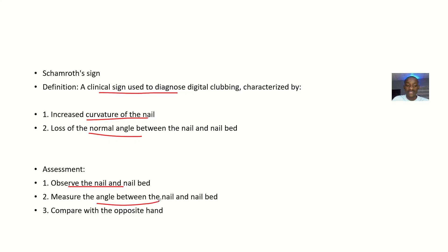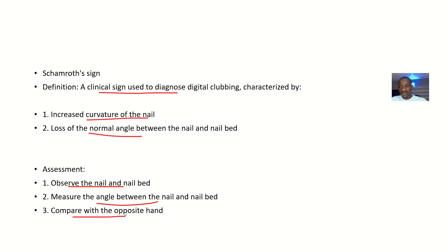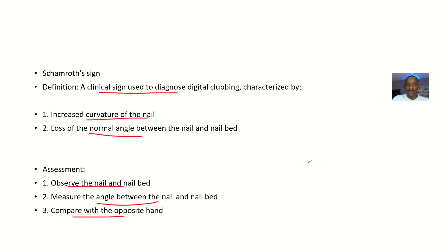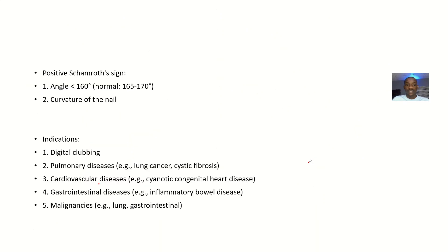When doing this assessment with the Schamroth sign, you are trying to measure the angle between the nail and the nail bed, and also comparing with the opposite hand. If you notice finger clubbing on one hand, you want to compare whether it is present on both hands. Normally your fingers should be together; if you see that opening, that's what is known as the Schamroth sign or the Schamroth window.